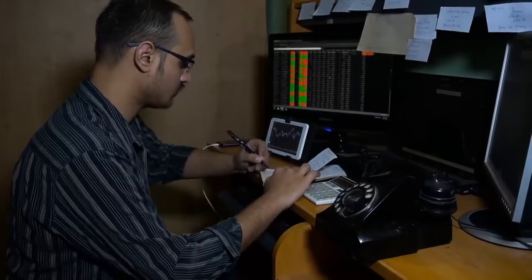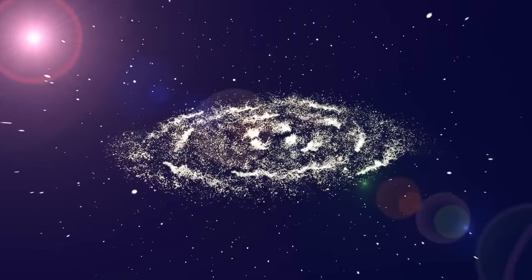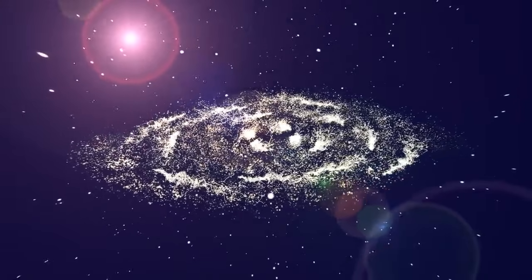One of Webb's central missions is to detect the first luminous entities, galaxies and stars that came into existence within the universe's first few hundred million years. These ancient structures are vital to understanding how the cosmos was born.